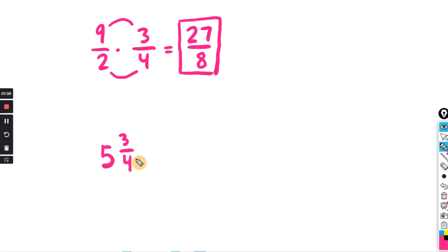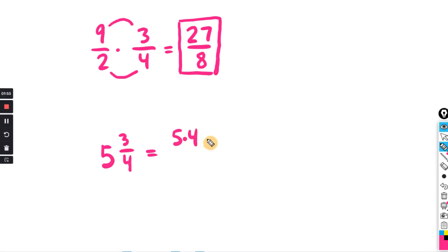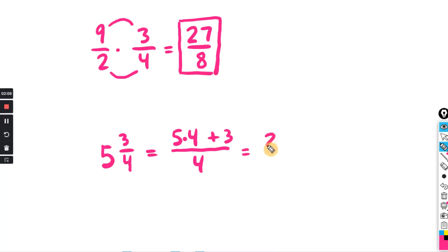For some problems you'll need to convert a mixed number to an improper fraction. Take the whole number in front, multiply it by the denominator, then add the numerator. For example, 5 and 3/4 becomes five times four plus three, all over four — that's 20 plus 3 over 4, which is 23 over 4.